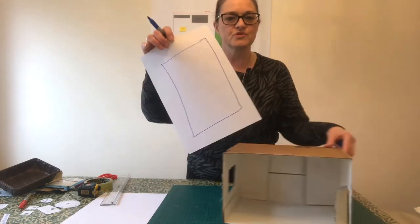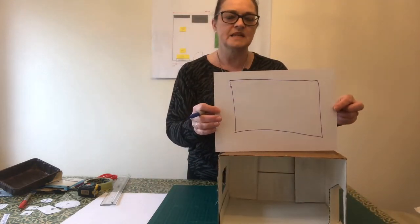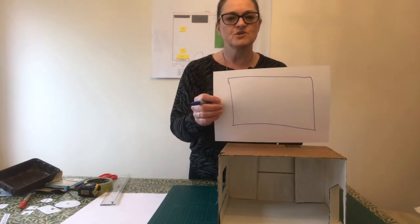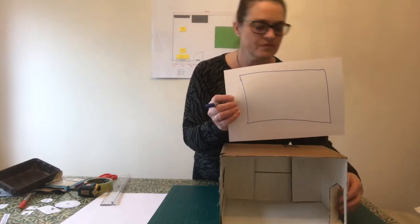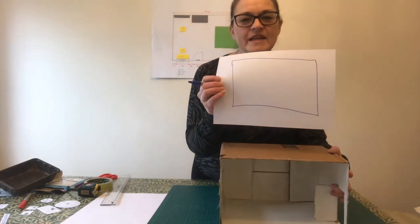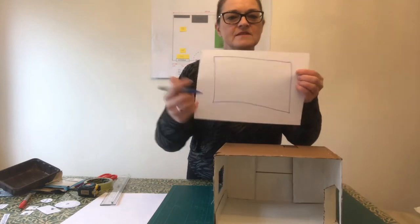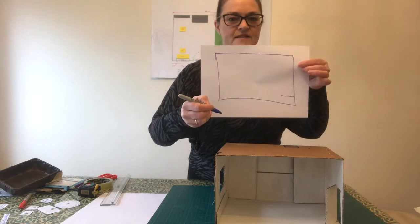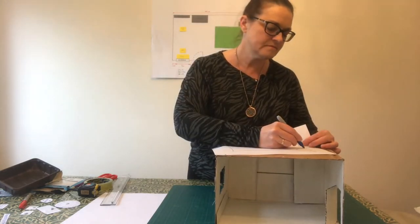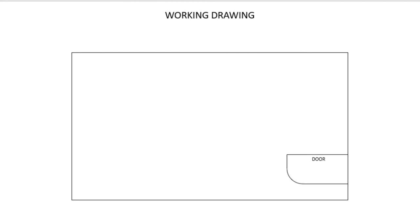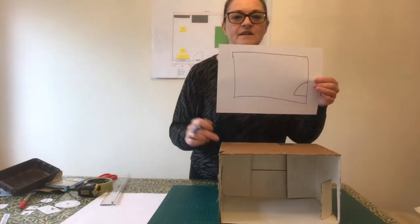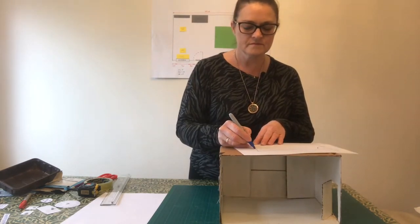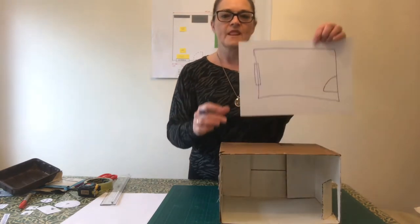I draw a rectangle which is basically a similar shape. My door is on this side and it opens into the room — this is the door and that's the way it opens. On the other side over here I've got my window.